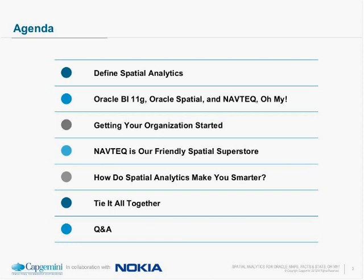As far as an agenda today, we're going to keep it fairly straightforward. We want to tackle defining spatial analytics. We're going to look at Oracle BI 11G, Oracle Spatial, and NAVTEC. We're also going to talk about how you can get started with localization intelligence and spatial analytics within your organization. We have Steve Lytle here from NAVTEC, who's going to give a great overview of NAVTEC and how that integrates with OBIEE. Then we're going to ask, how does spatial analytics make you smarter? And we'll talk about what components you actually need for localization intelligence and spatial analytics, then wrap it up with Q&A.